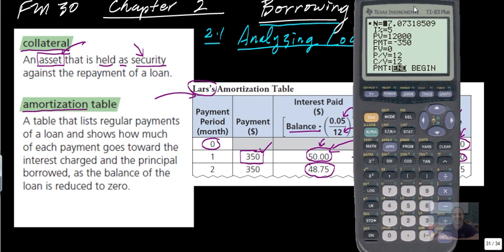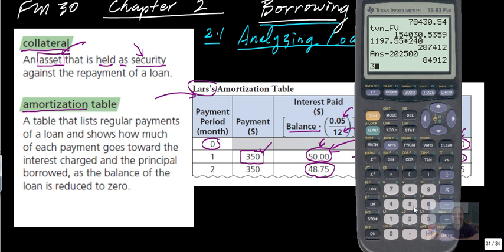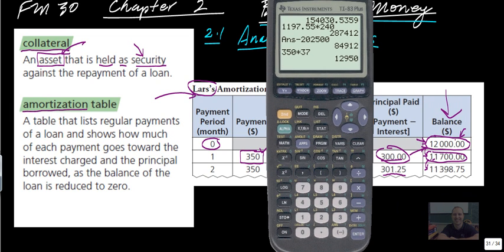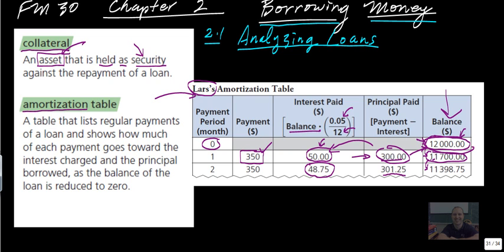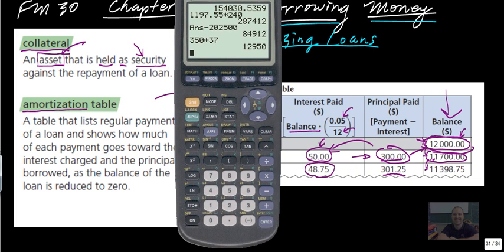At $350 a month. And we can also figure out, so $350 times 37 would be approximately how much money he's actually going to pay. So $350 times 37, $12,950. So he borrowed $12,000 right here, and he's actually paying $12,950. So the interest is $950 out of the whole thing. So all of these numbers here in the interest paid column, if you add up all those over the course of the three years, three plus years, it'll be $950.